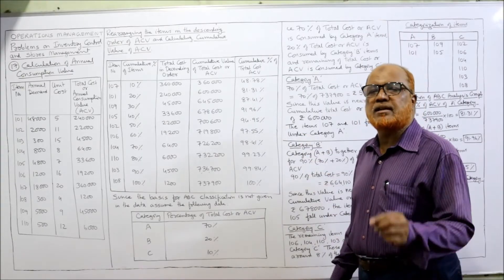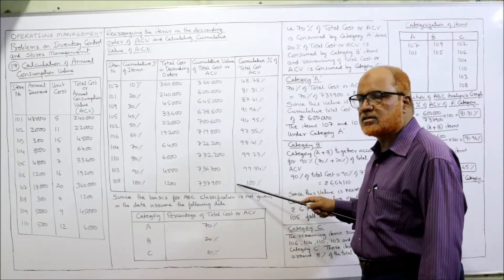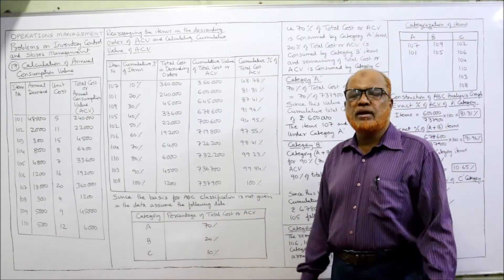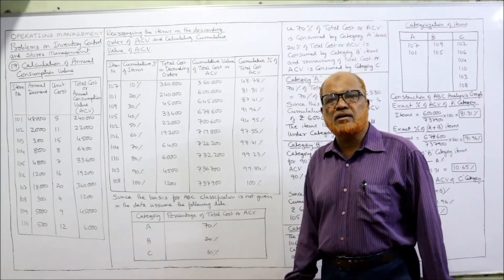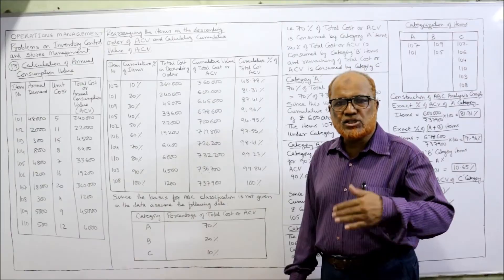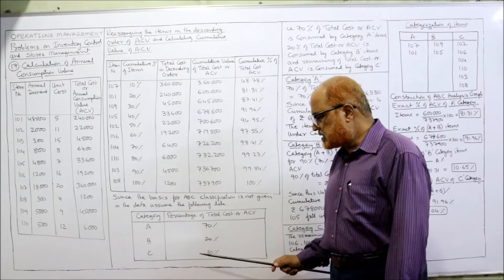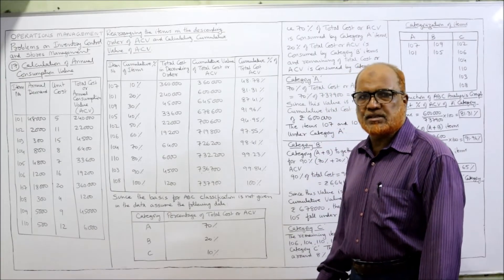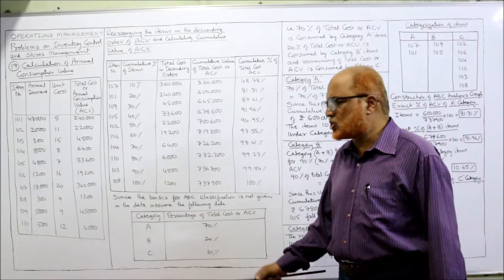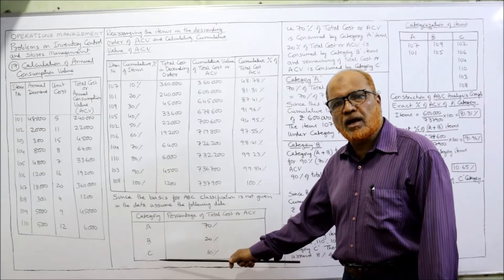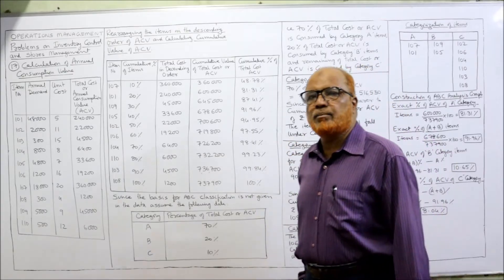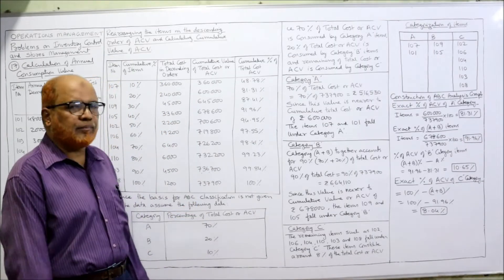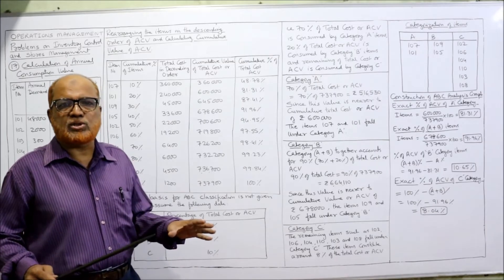Since the basis for ABC classification is not given in the data, we assume the following: normally, 70% of the total value goes in A category, the next 20% in B category, and the last 10% in C category. This is the normal classification in ABC analysis. Now we find out which items come under A, which under B, and which under C, by taking the percentage of total cost.